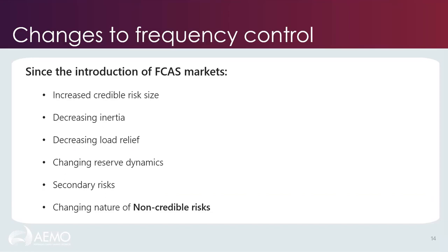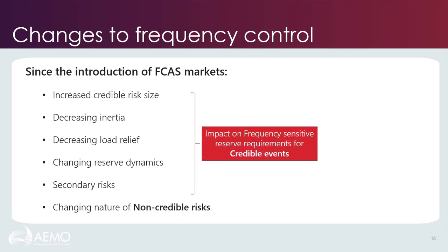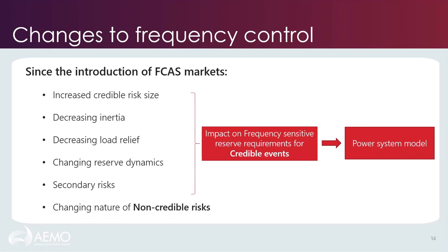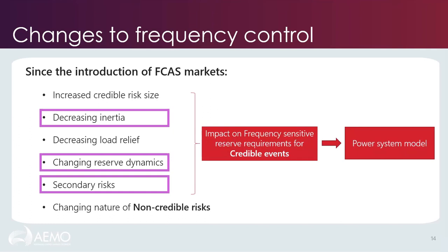Recalling the changes that have happened since the FCAS markets were first introduced, these changes have a direct impact on the frequency-sensitive reserve requirements for managing credible events, tying back to that first question of what is required to manage frequency for credible events out to 2025. To answer this, we used a power system model where we tripped a large generator — our credible risk — to simulate frequency responses under varying system conditions reflecting each of the changes individually. In the interest of time, we'll go through only a selection of highlighted results, but the full detail is available in section B4 of the frequency appendix report.